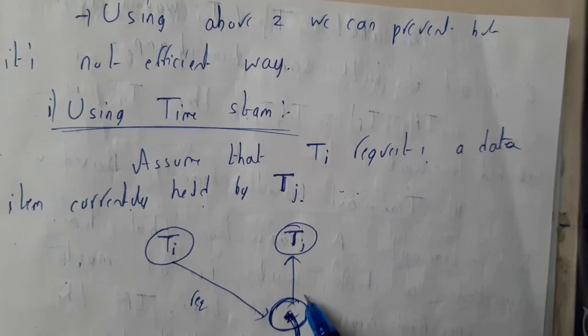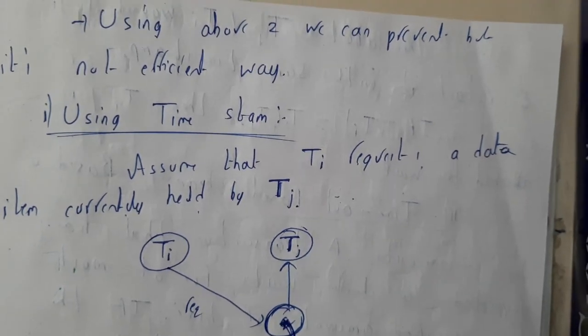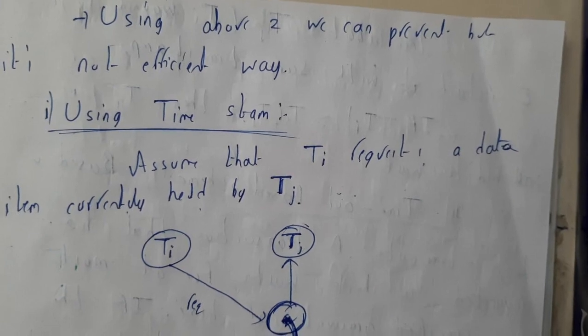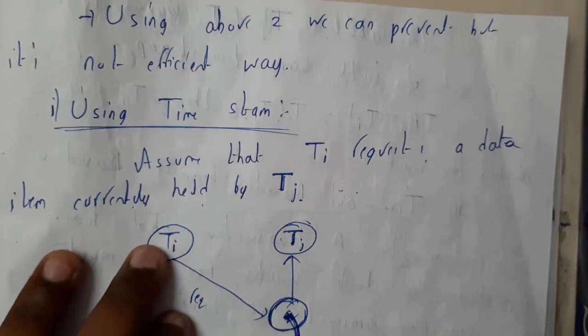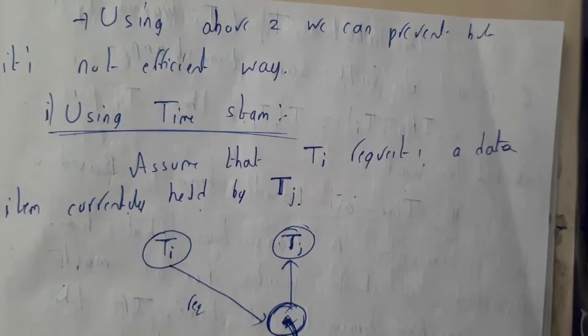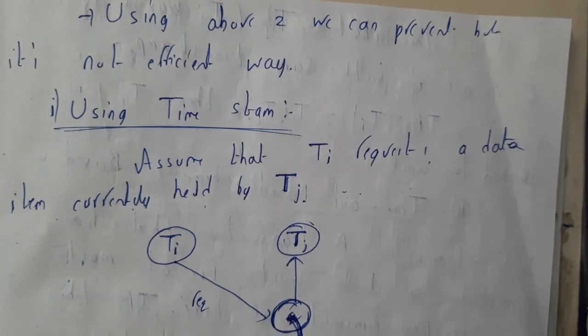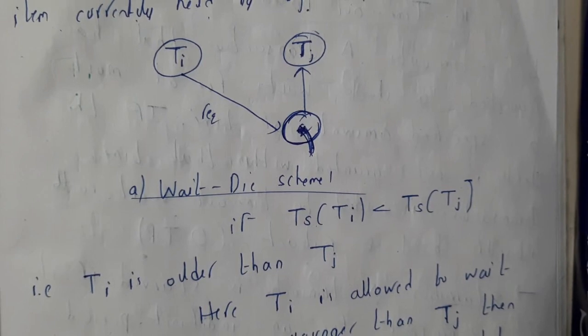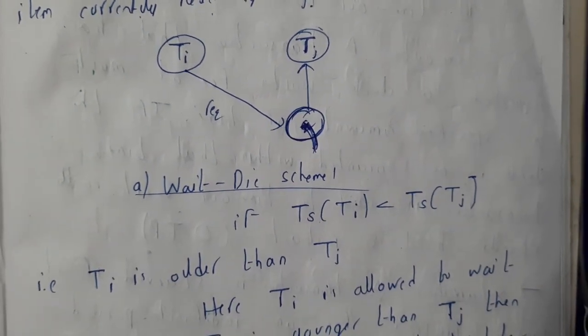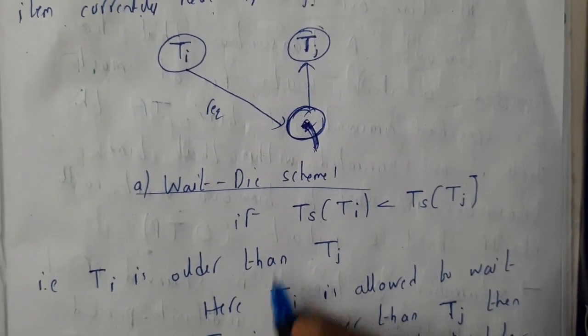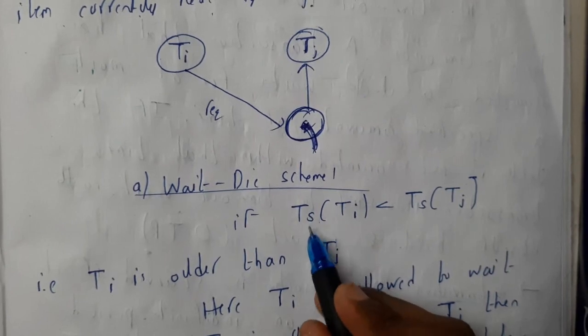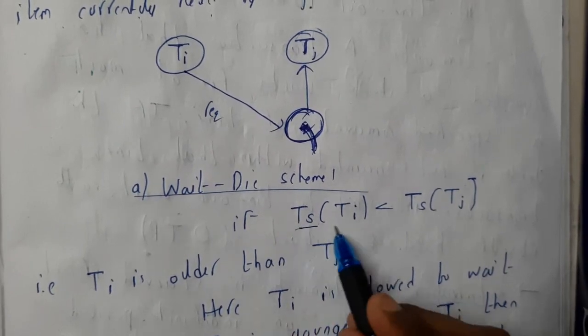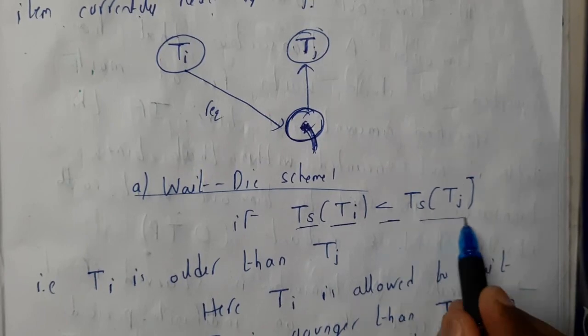Assume Ti requests for a data item currently held by Tj. Let us assume item Q which is held by Tj, and Ti is requesting for it. We will be fixing a waiting time. Basically, it should not wait for a long time.